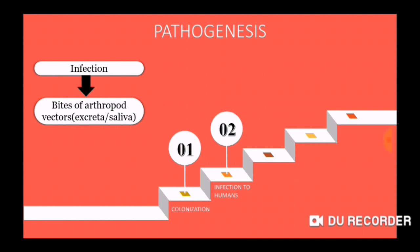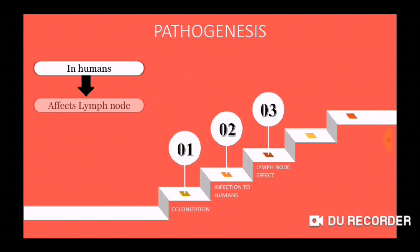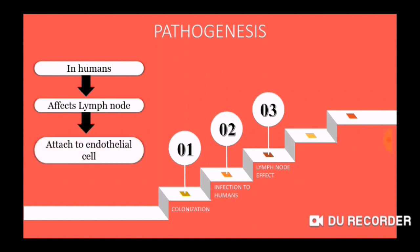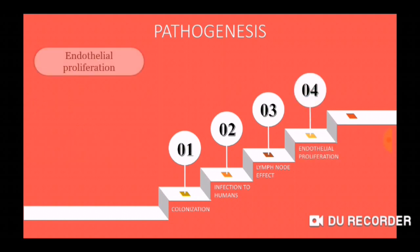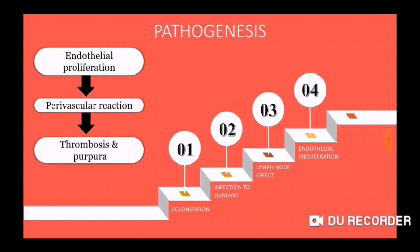After the infective stage, the infection mainly occurs in the lymph nodes of humans and also affects the endothelial cells. The bacteria then circulate through the blood vessels and attach to the endothelial cells. The next step is endothelial proliferation. After attaching to endothelial cells, the bacteria begin proliferating. Our immune system then reacts and produces perivascular reactions, and the major symptom — maculopapular rashes — then appears.